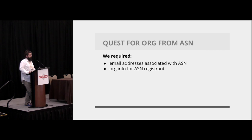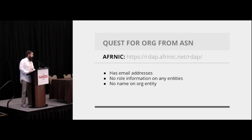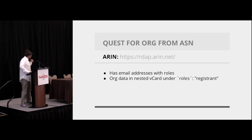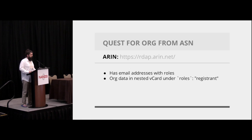I'm going to quickly go through the differences between the five RIRs. AFRINIC has email addresses but no role information — a role is what the entity does, like administrative, technical, abuse, or registrant — and they have no names on the orgs at all, so I get the AS info but don't know what company owns it. ARIN does things pretty much perfectly: they have all email addresses, they have the roles, and they nest the data so it's one query.